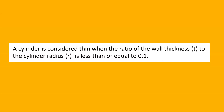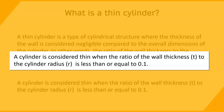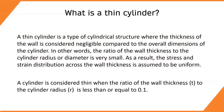A cylinder is considered thin when the ratio of the wall thickness, t, to the cylinder radius, r, is less than or equal to 0.1.